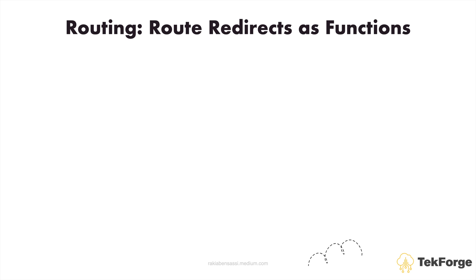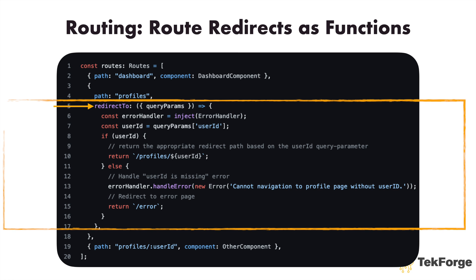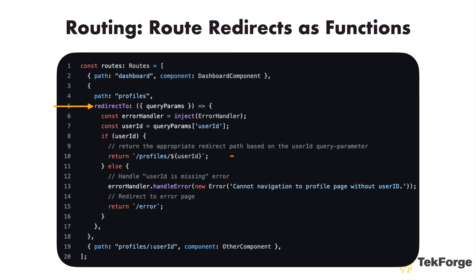In Angular 18, the redirect property within the route's configuration has been enhanced to accept a function that returns a string. With this change, you can implement more sophisticated logic for determining the target route based on various conditions, including runtime states. Previously, the redirect property could only specify a static string representing the path to redirect to.